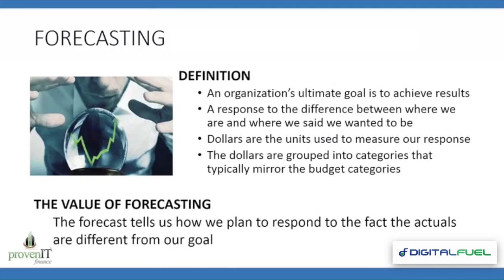And forecasting: an organization's ultimate goal is to achieve results. Our forecast is a response to the difference between where we are and where we wanted to be. If a budget serves as a way to measure goals we're trying to achieve and a variance occurs when results achieved are different from those goals, then a forecast is our response to the difference between where we are and where we want to be. Dollars are typically used as the measure and grouped into categories that mirror what we had in the budget, because we're trying to do some kind of comparison between them. The forecast has value in that it tells us how we can plan to respond to the fact that the actuals are different than the goals we are trying to achieve.